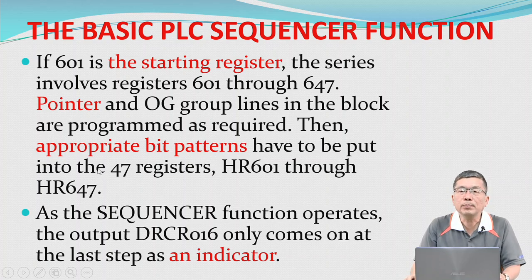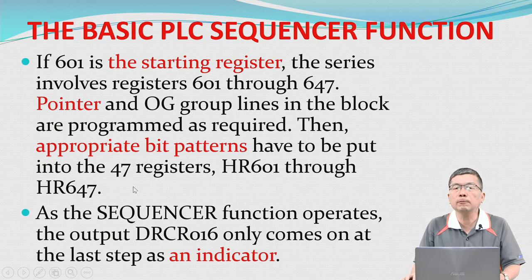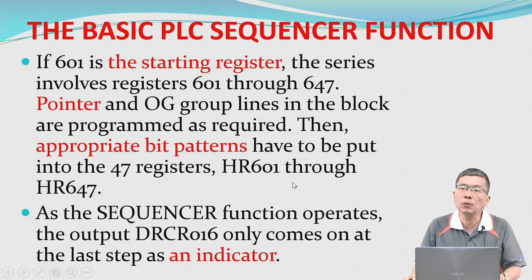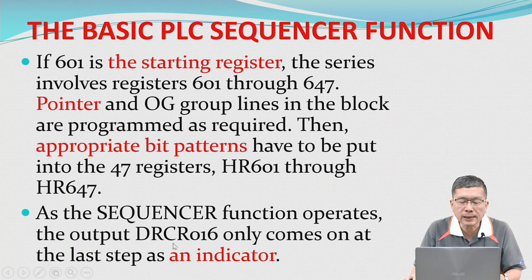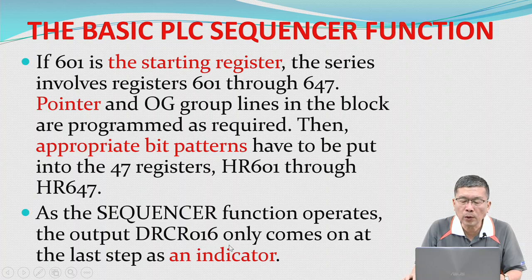The appropriate bit pattern has to be put into the 47 registers — holding register 601 through holding register 647. As the sequencer function operates, the output DRCR16 only comes on at the last step of the sequence.